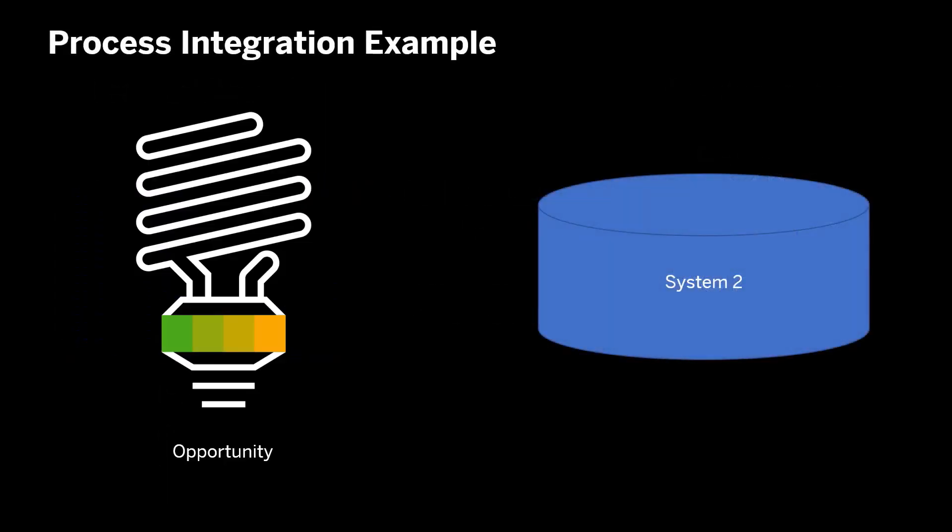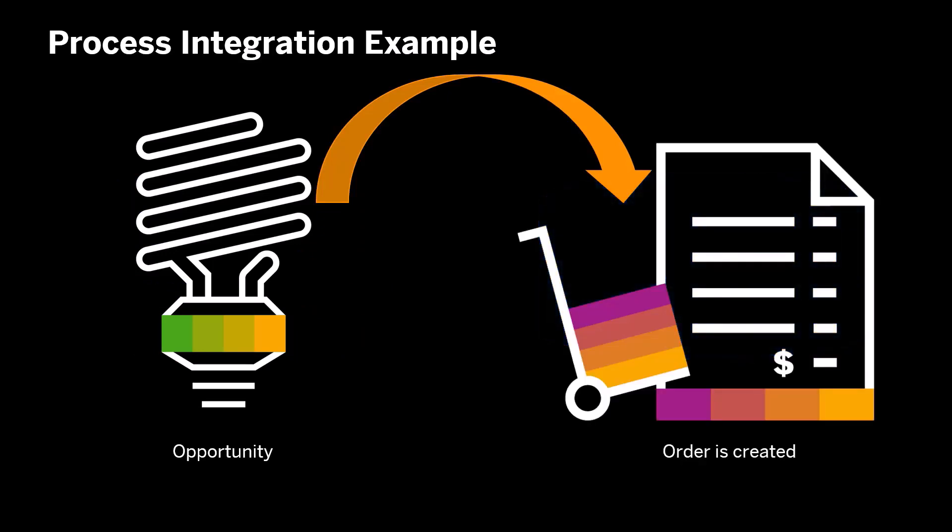As an example, let's say an opportunity has been created in system 1. This opportunity is transferred to system 2, and from this opportunity, an order is created in system 2. This opportunity message will be sent immediately from system 1, and the order will be created in the second system. In this instance, the data is very small.